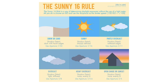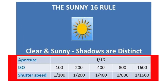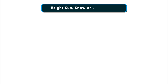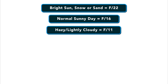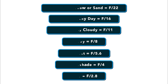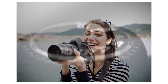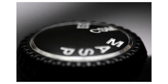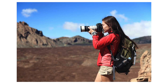The Sunny F16 rule also corresponds to every other outdoor lighting scenario. It tells you what aperture to switch to as lighting changes from brightest sunlight to deepest dusk. In every case, the shutter speed remains 1 over the ISO. Very bright sun, snow, or sand: F22. A normal sunny day: F16. Hazy or lightly cloudy: F11. Cloudy day: F8. Overcast day: F5.6. Sunset or shade: F4. Dusk: F2.8. Use this guide to dial in manual exposures in any outdoor lighting situation and feel like a master of manual exposure.